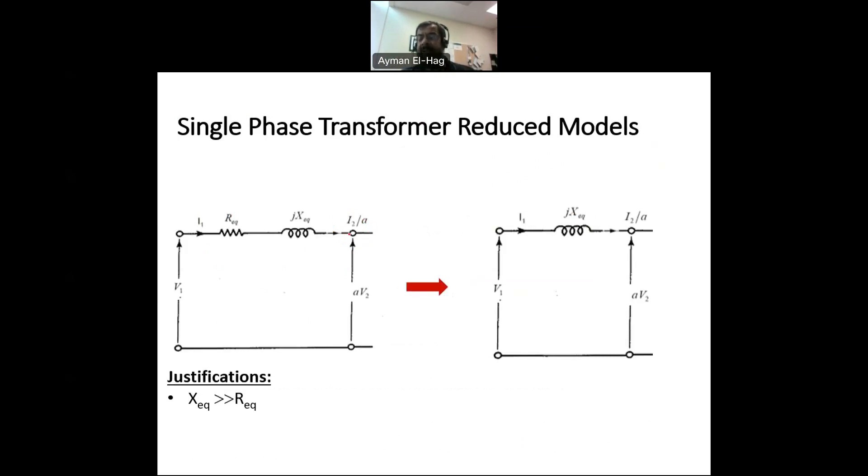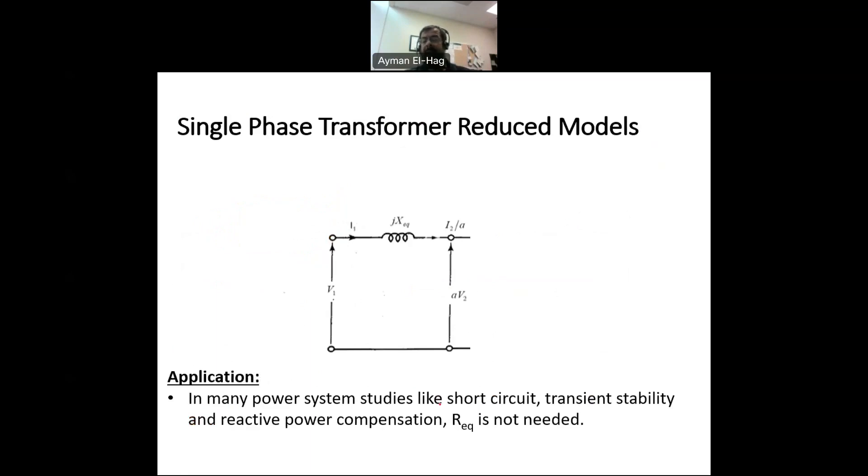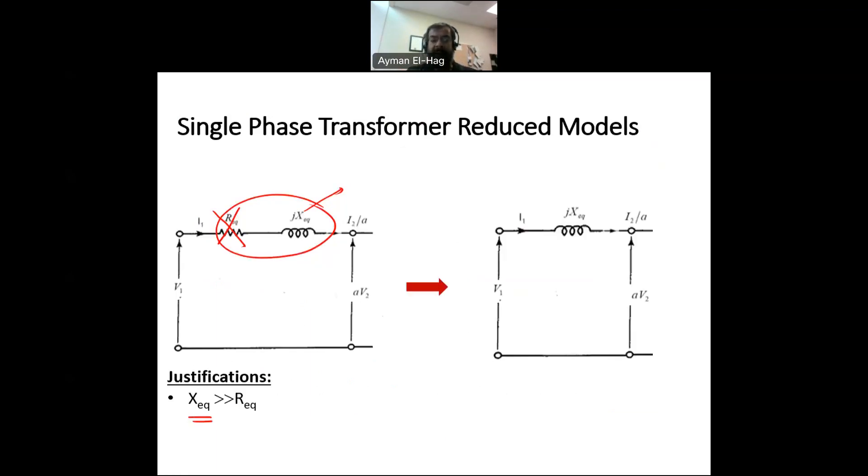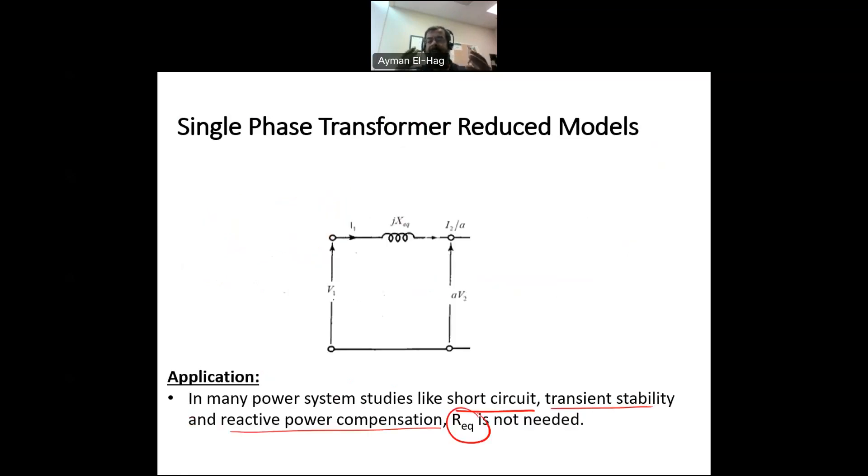The final model that we'll talk about today is that we can also ignore R equivalent. And the justification is that because X equivalent is much, much larger than R equivalent, so the voltage drop here is mainly coming from X equivalent. So we can ignore R equivalent. Now, where we can use this model, we can do it in different types of studies, like for example, short-circuit analysis, transient stability, reactive power compensation. R is not required in these models. So we can ignore R, knowing that X equivalent is much larger than R equivalent. Then this will not really impact much those studies.